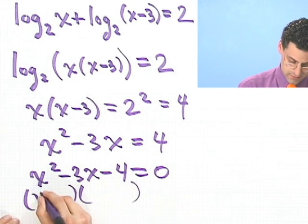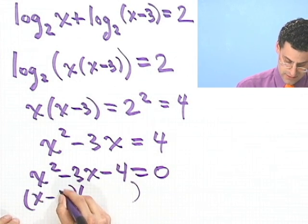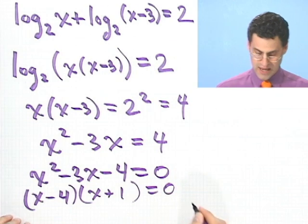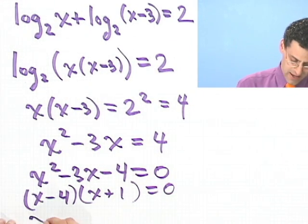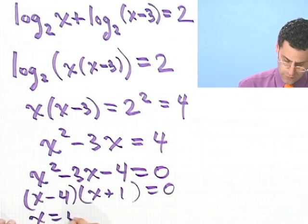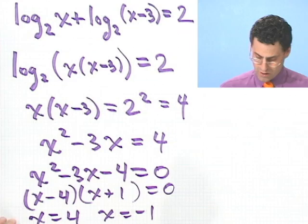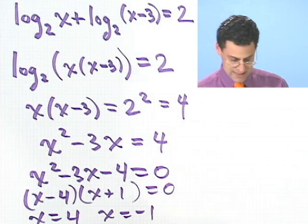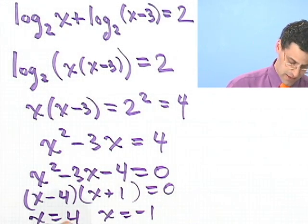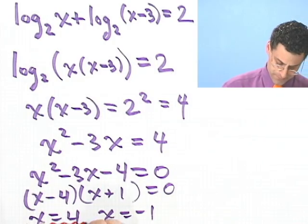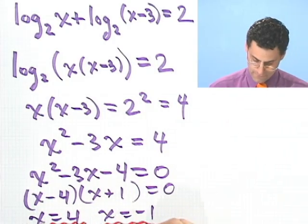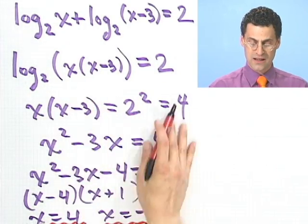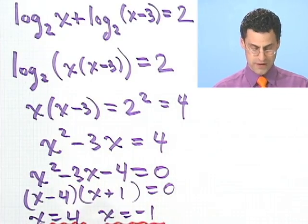It factors as (x minus 4)(x plus 1). So either x equals 4 or x equals minus 1. Those are my two answers. Do you see how I took those logs, combined them into one big log, and then just untangled the log stuff to get an equation and solve? But you must always remember to check your answers.